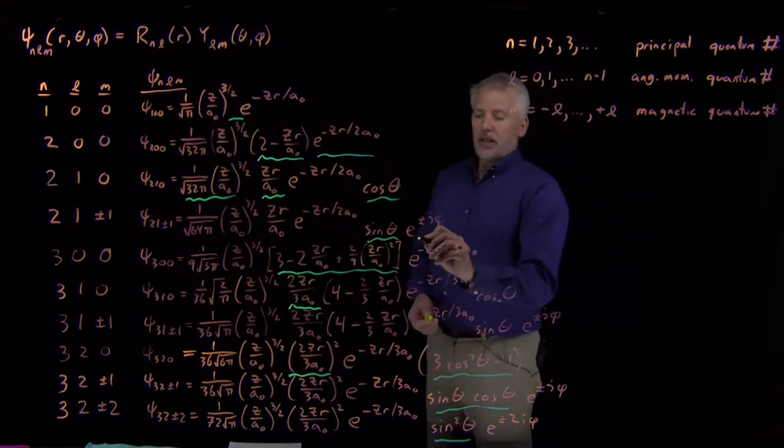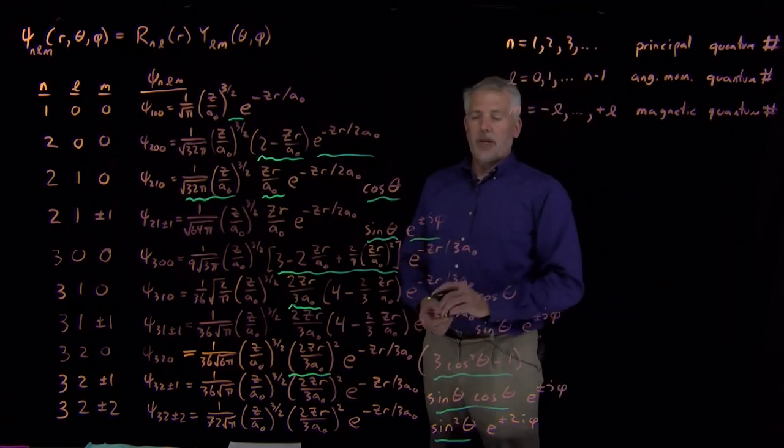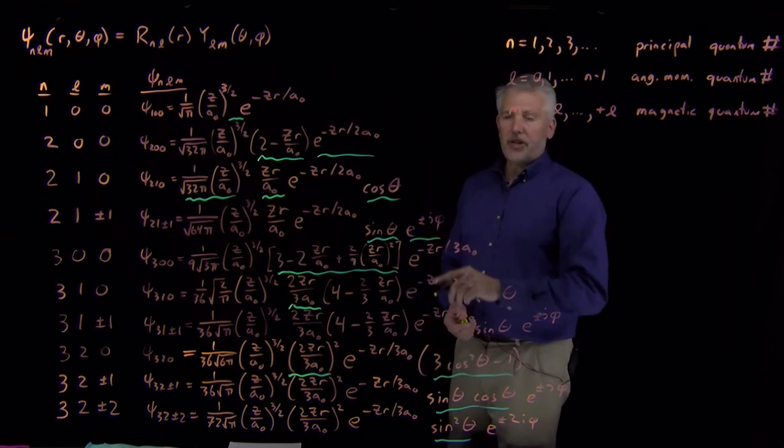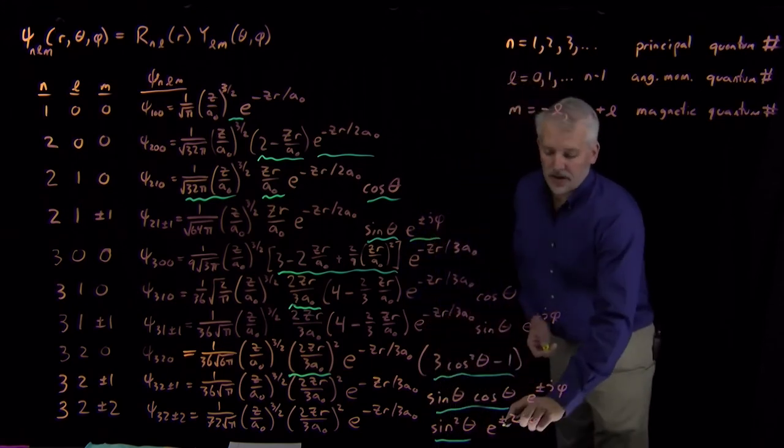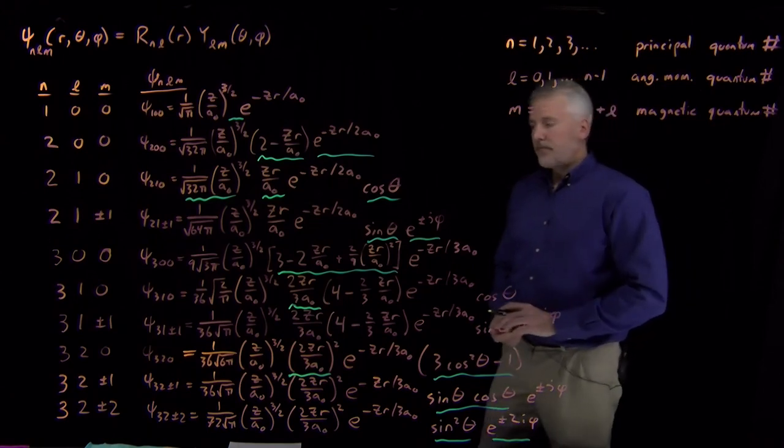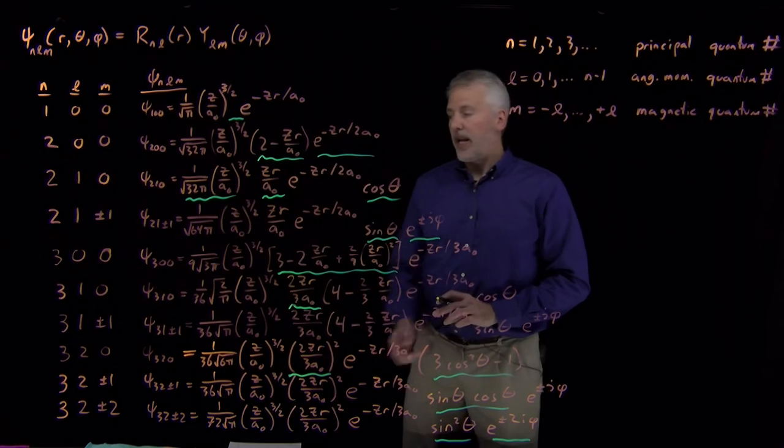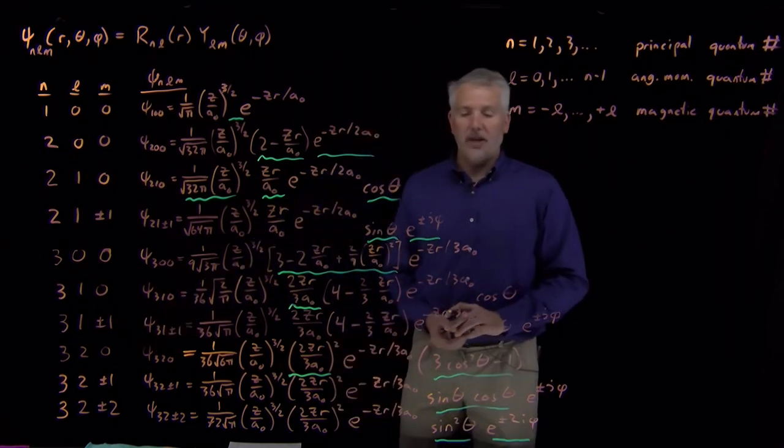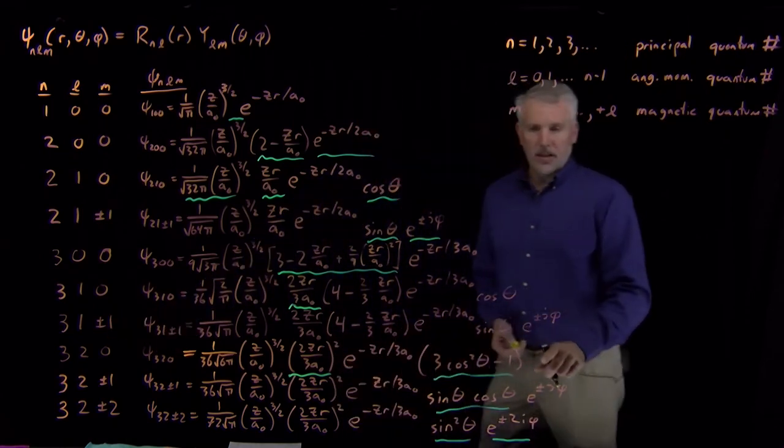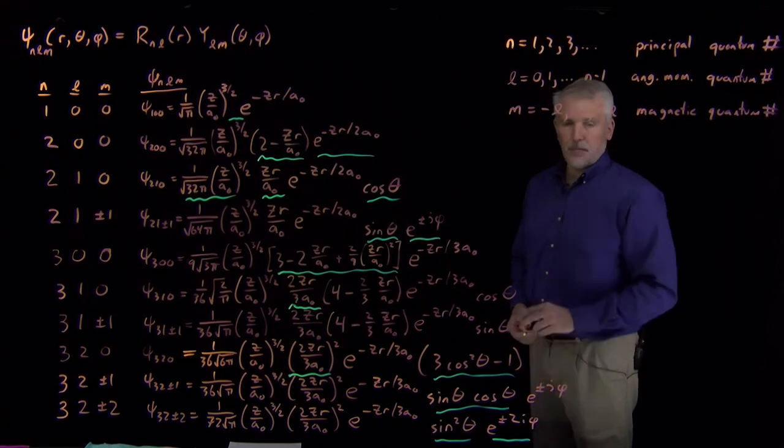And lastly, we have a term sometimes that looks like e to the i phi, or e to the minus i phi, e to the 2 i phi, or e to the minus 2 i phi. And that depends on these values of m. So when l is non-zero, m can also be non-zero, and that results in a complex wave function that has this imaginary term on the end.